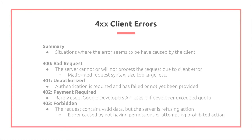400 — client errors. These are situations where the error seems to have been caused by the client. For example, 400 bad request means the request could be malformed or the size too large. 401 refers to authentication being required, but it has failed or not yet been provided. 402s are rarely used, but for example, Google Developers API uses it — if the developer exceeded their quota, then payment is required. 403 is forbidden, which is similar to unauthorized; however, this is given when there is a prohibited action or no permissions provided.